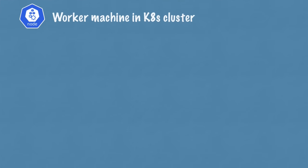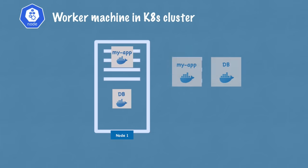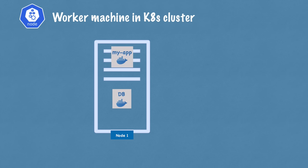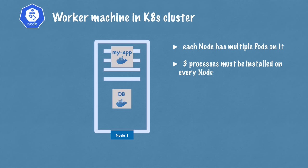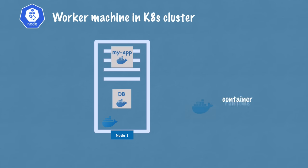We'll start with a basic setup of one node with two application pods running on it. One of the main components of Kubernetes architecture are its worker servers or nodes. Each node will have multiple application pods with containers running on it. Kubernetes uses three processes that must be installed on every node to schedule and manage those pods. Nodes are the cluster servers that actually do the work — that's why they're also called worker nodes. The first process that needs to run on every node is the container runtime.